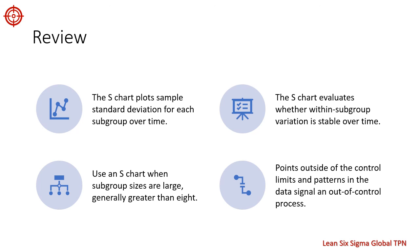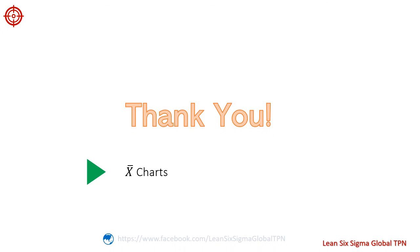Let's review. The S chart plots the sample standard deviation for variable data in subgroups over time. We use the S chart to determine if within-subgroup variation is stable over time. In general, S charts are appropriate when the subgroup size is greater than 8. By looking for points outside the control limits and patterns in variation, we can use the S chart to spot unusual sources of variation in our processes. Thank you for listening. In the next lesson we will talk about the X-bar S charts.